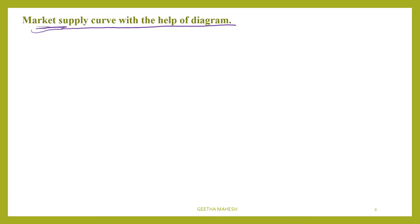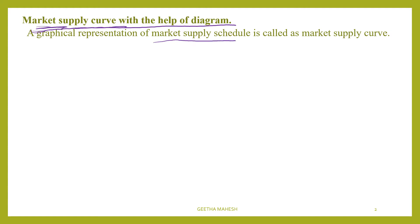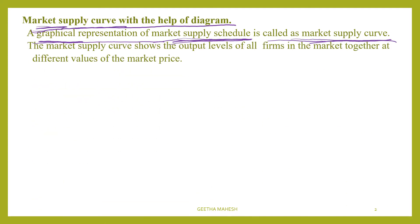What do you mean by market supply? It means total supply in the market at different levels of prices. The market supply curve is a graphical representation of the market supply schedule. This market supply curve shows the output levels of all firms in the market together at different values of market price. Market price won't be constant — it will keep on changing. When price changes, the quantity supplied by the firms also changes, and that is shown by this market supply curve.